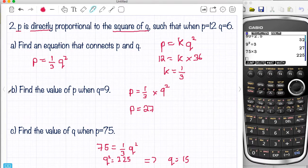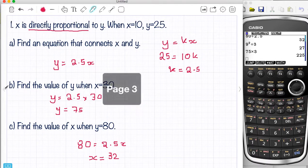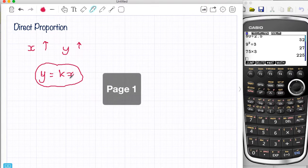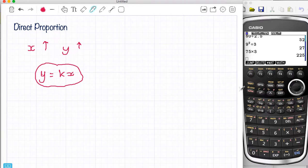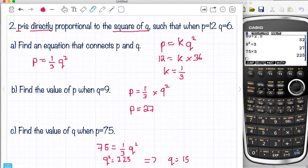So the important thing to remember here is always that the starting point is Y equals KX or P equals KQ or A equals whatever. And the other thing that I have to stress is read these questions carefully and look out for things like square, square root, and cube. And if you can do that, these questions are very straightforward.